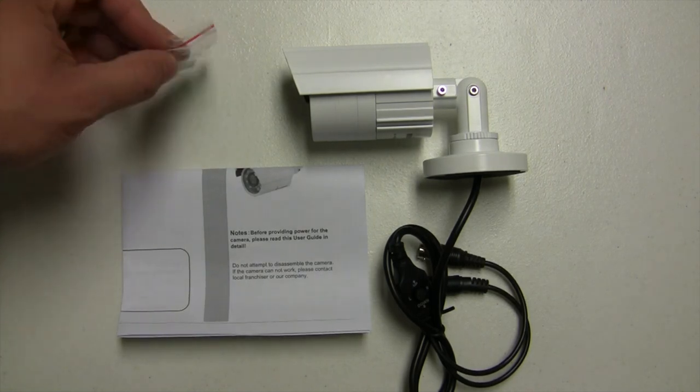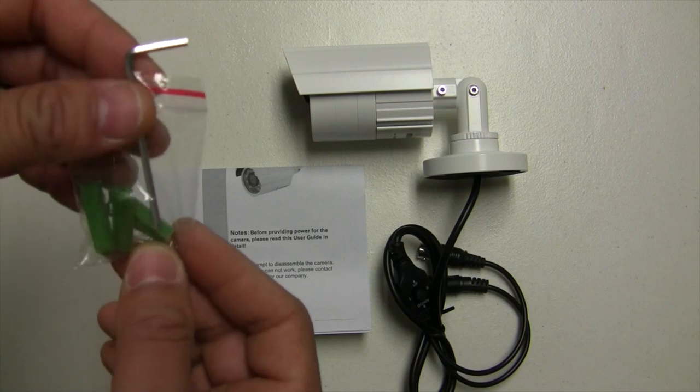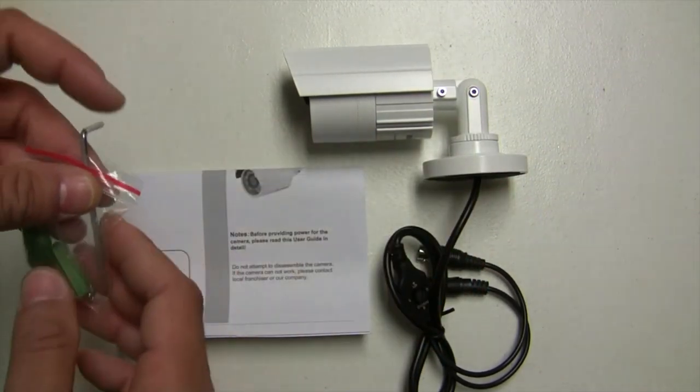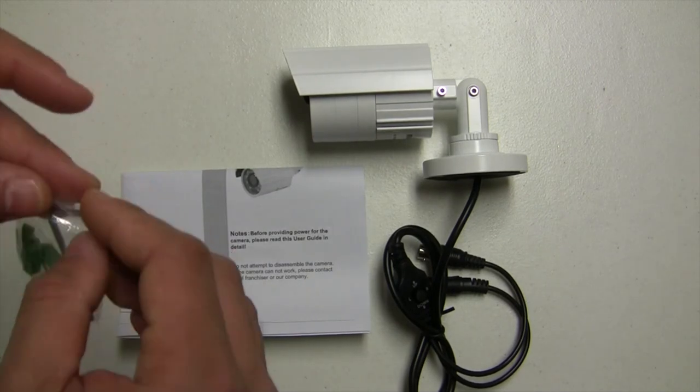Inside the box you can find an Allen key and the mounting screws. The Allen key is for you to adjust the wall mount right here. You can see the screws there for the adjustment.